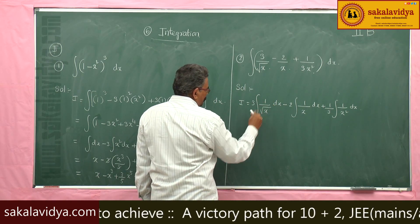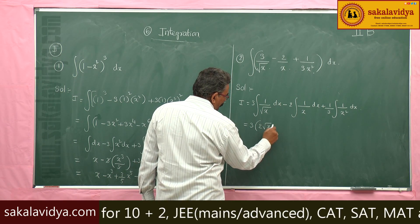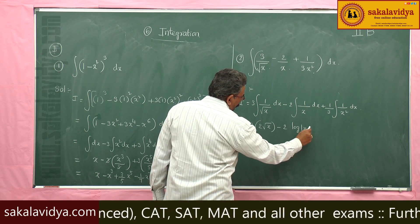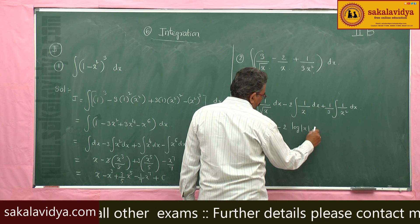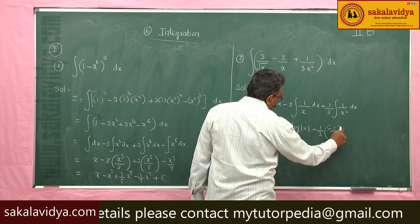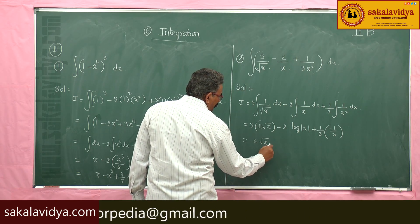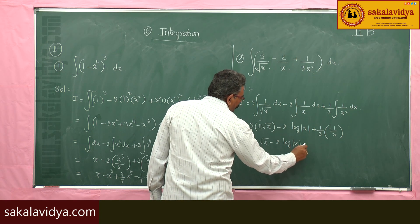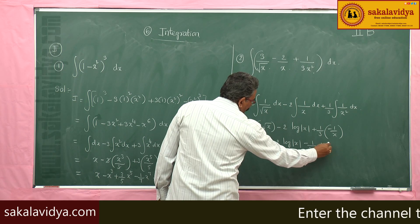The integral of 1/√x is 2√x and the integral of 1/x² is -1/x. So we get 3 times 2√x minus 2 log|x| plus 1/3 times (-1/x), which gives 6√x - 2 log|x| - 1/(3x) plus constant of integration.